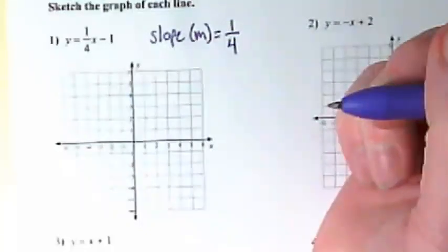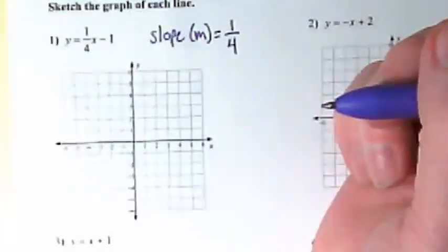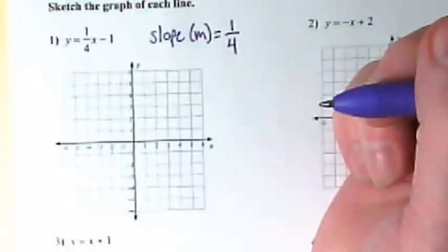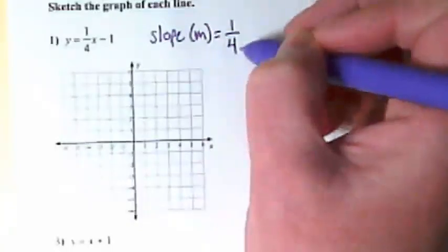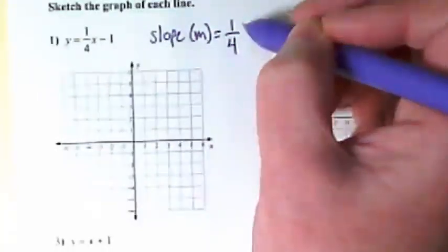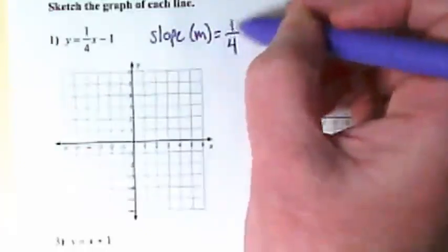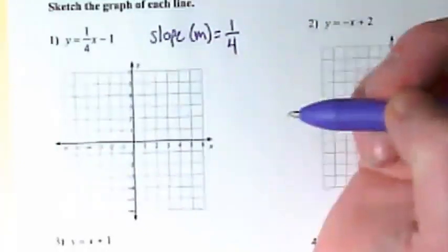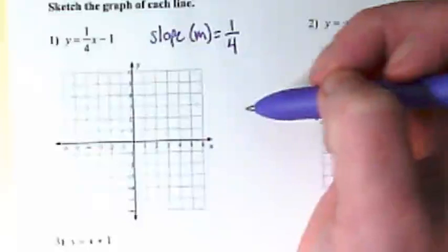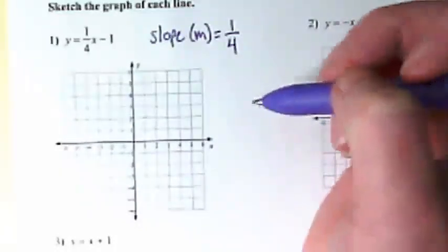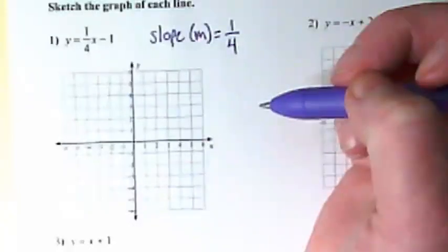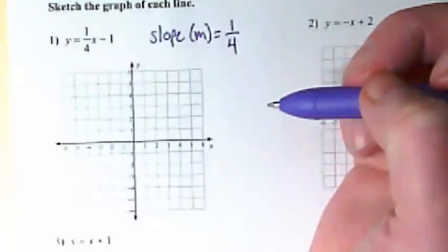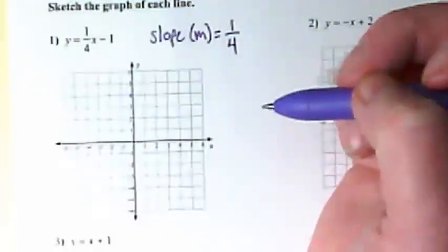We do not read that as 1 fourth because the 1 is our rise and the 4 is our run. So this isn't a part-whole relationship like a fraction would be. It means the rise is here and the run is here. That's why you will not see these written typically as decimals. We all know the decimal for this would be 0.25, but by seeing 25 hundredths x, that doesn't tell you easily what your rise is and what your run is, and what we need is to know that.